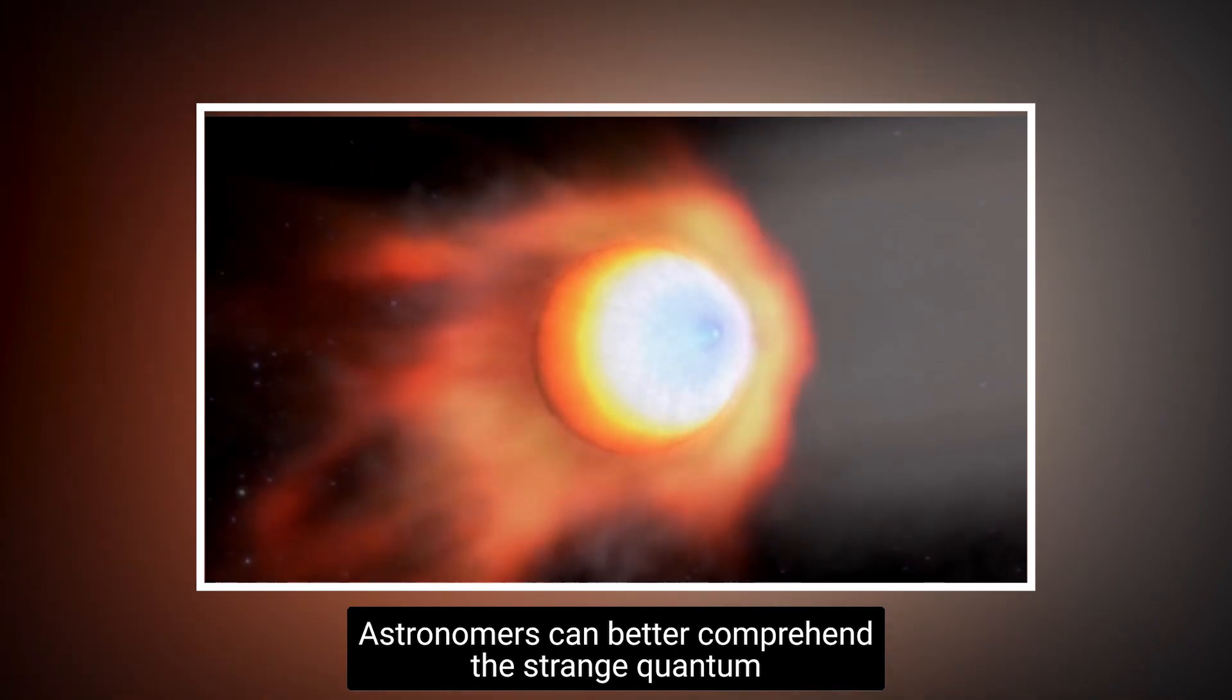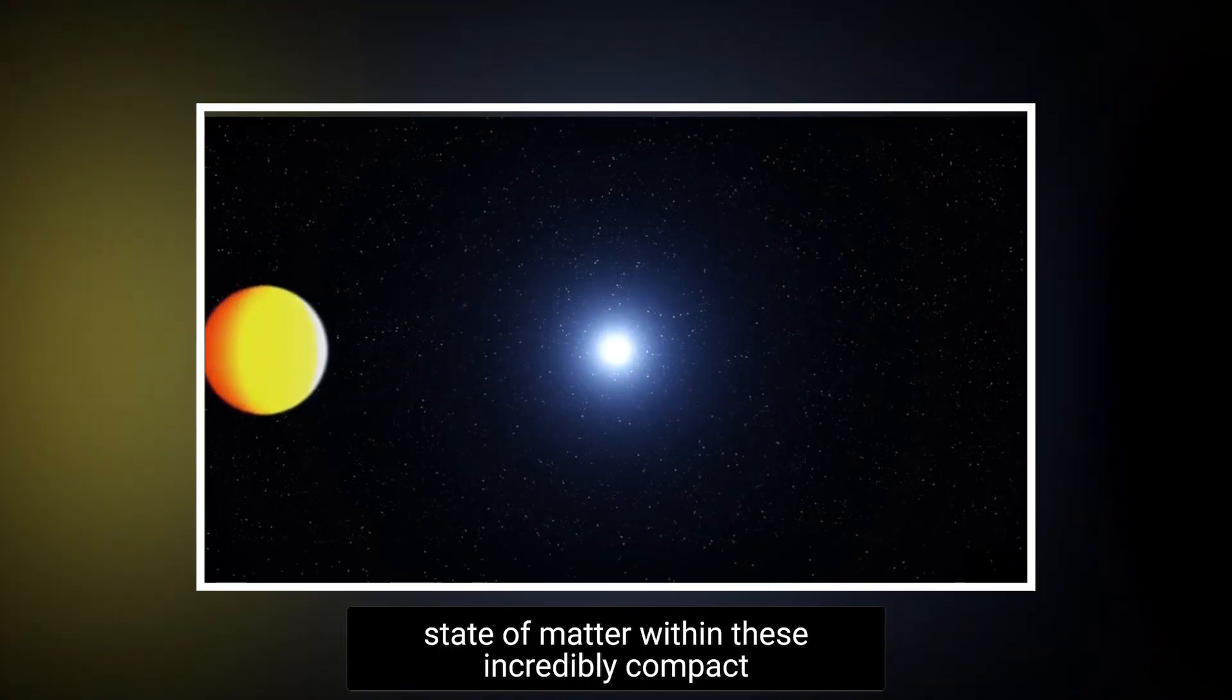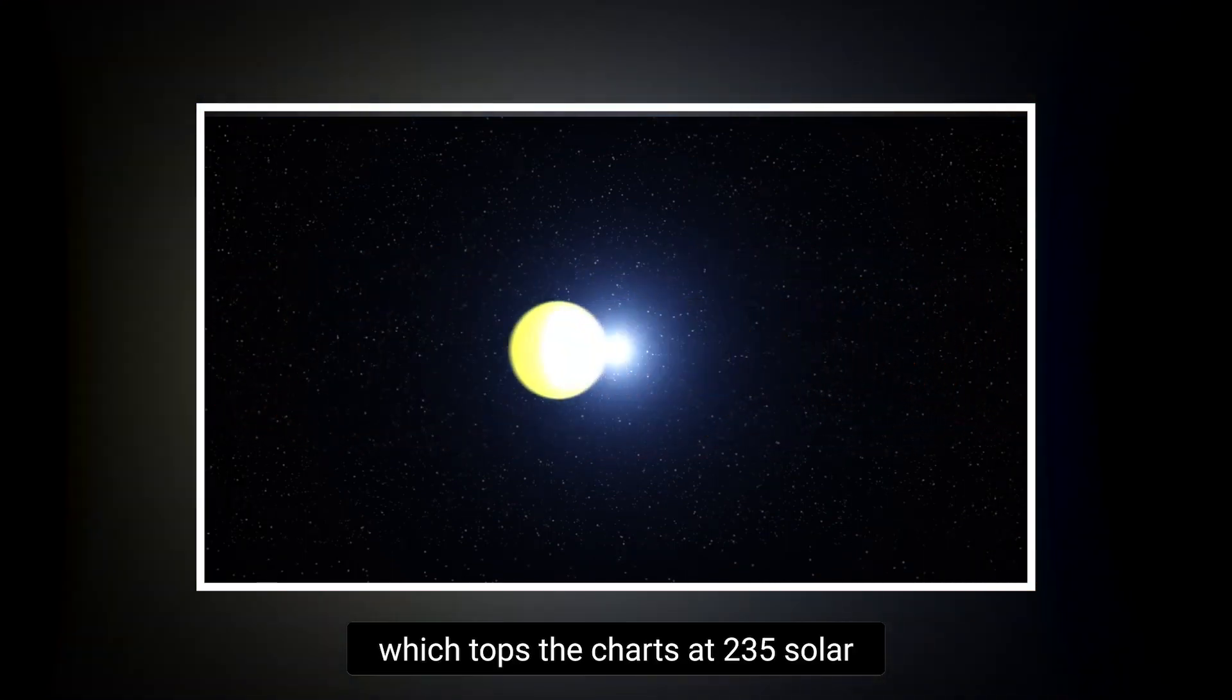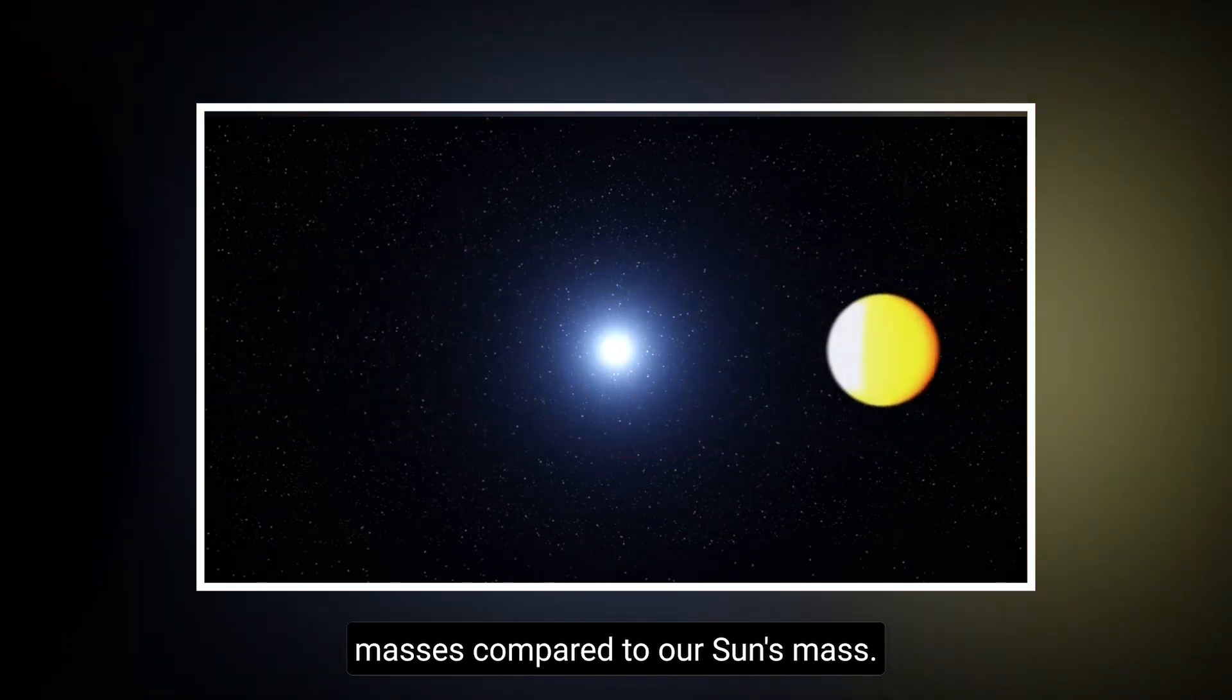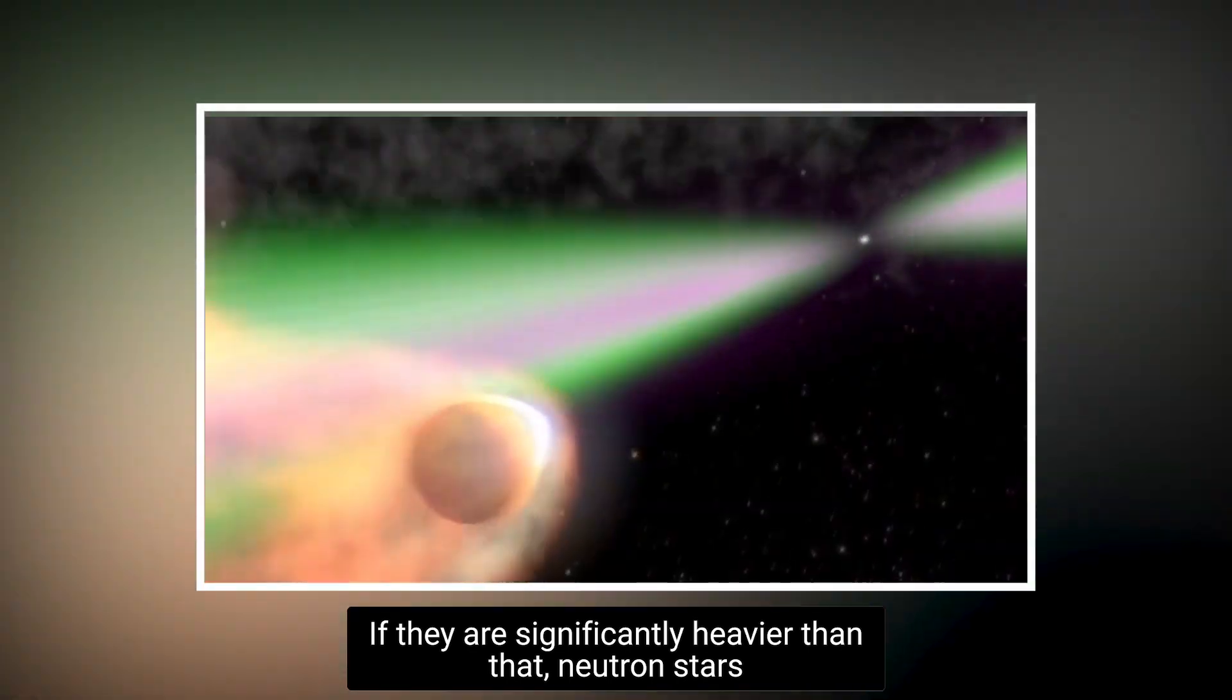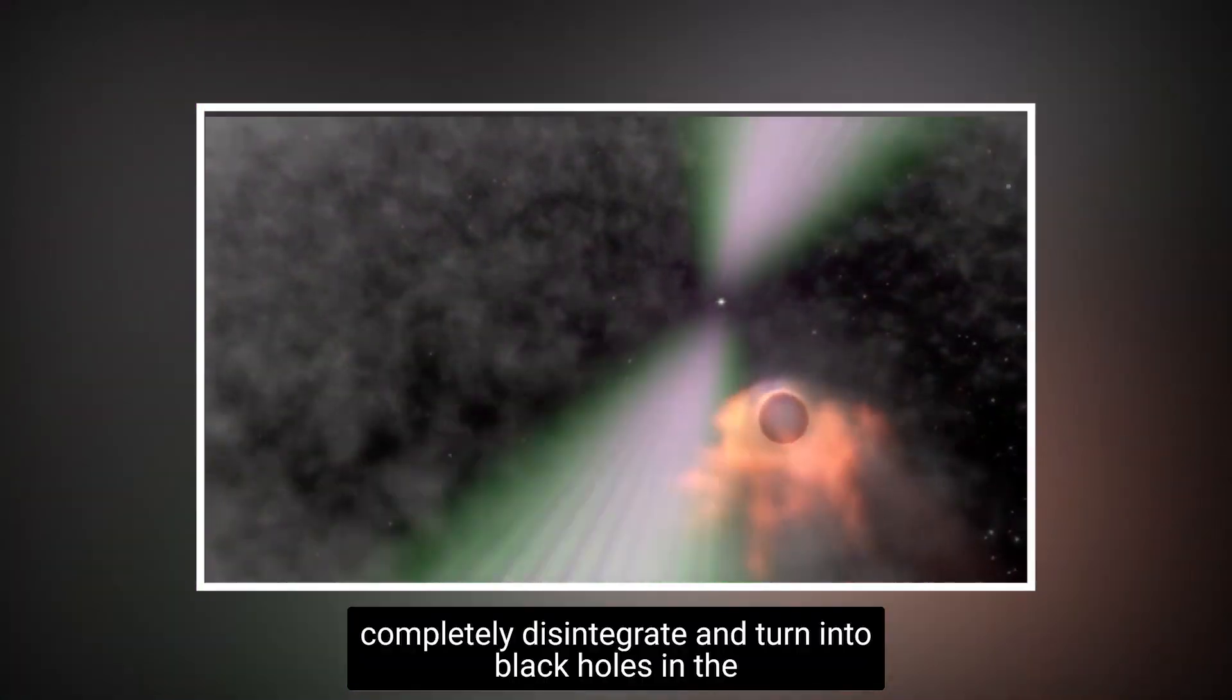Astronomers can better comprehend the strange quantum state of matter within these incredibly compact objects by weighing the record-breaking neutron star, which tops the charts at 2.35 solar masses compared to our Sun's mass. If they are significantly heavier than that, neutron stars completely disintegrate and turn into black holes.